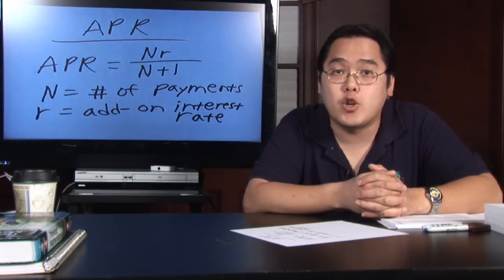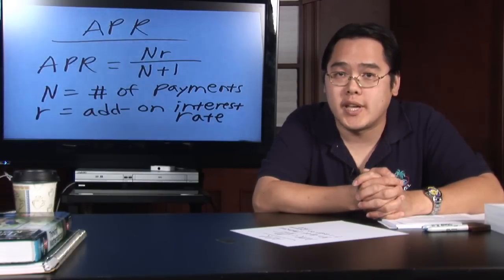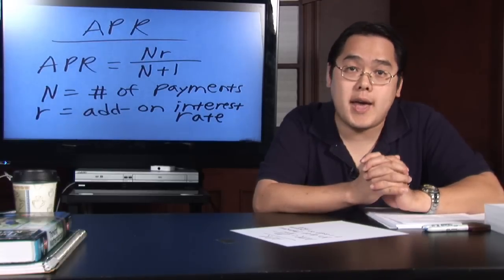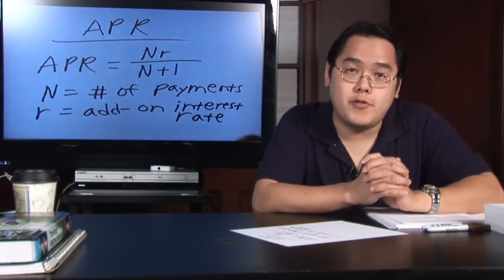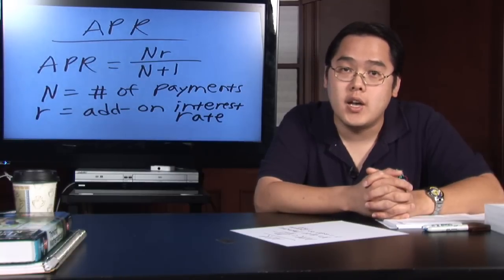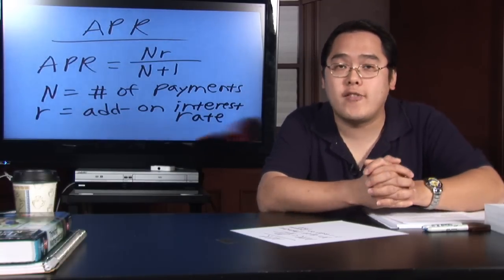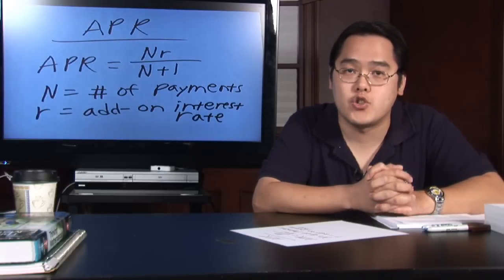APR stands for annual percentage rate. It is often confused with interest rate, but by law, automobile dealers and credit card companies have to provide you with this information as part of Congress's Truth and Lending Act. Legally, they must tell you what the annual percentage rate is.